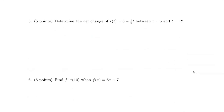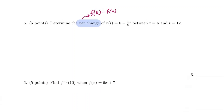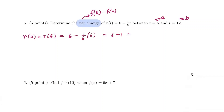For number 5, we want to determine the net change of this function between t = 6 and t = 12. Net change is given by f(b) minus f(a). Labeling our points: a = 6 and b = 12. So r(6) is 6 minus 1 over 6 times 6, which is 6 minus 1, equaling 5.